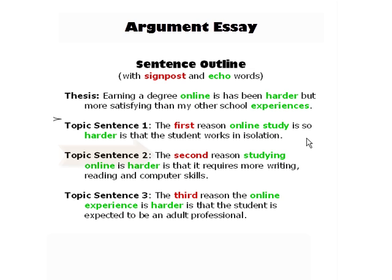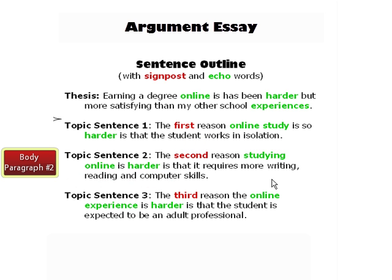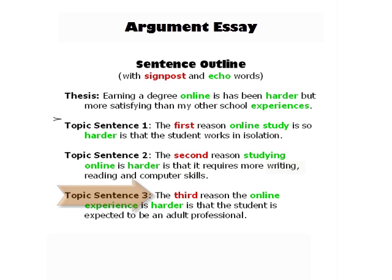Then the second topic sentence: the second reason studying online is harder — notice the repetition, notice the formula being used here; use that formula, it's called the expository essay formula — is that it requires more writing, reading, and computer skills. And you can believe that in this second body paragraph, writing, reading, and computer skills are going to be discussed.